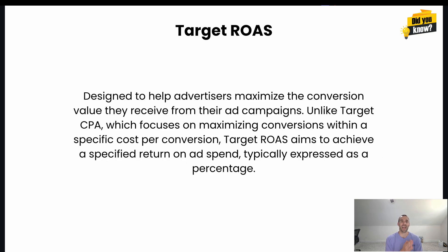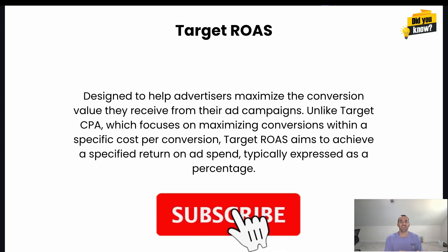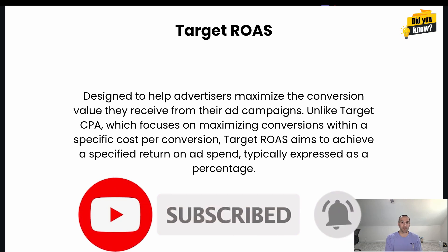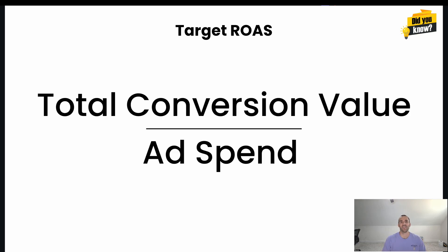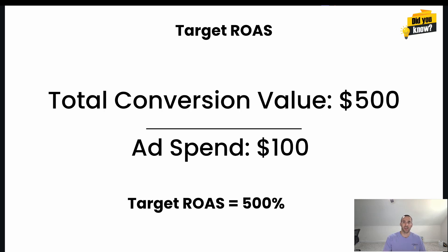Now let's talk about target return on ad spend, which has a lot of similarities. Target ROAS is designed to help advertisers maximize the conversion value they receive from their ad campaign. Unlike target CPA, which focuses on maximizing the quantity of conversions, target ROAS aims at achieving a specific return on ad spend, expressed as a percentage. Your ROAS is simply your total conversion value — typically revenue for e-commerce — divided by your ad spend. For example, $500 in conversion value divided by $100 in spend gives you a 500% ROAS.